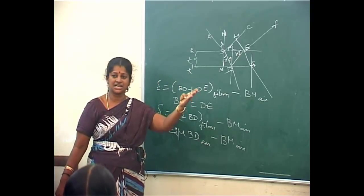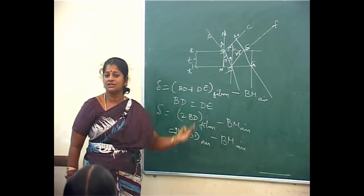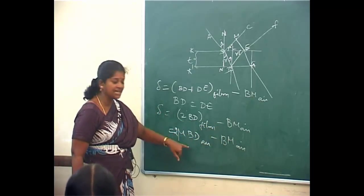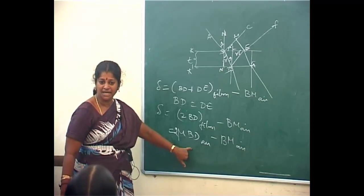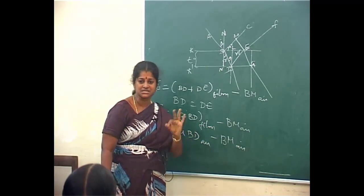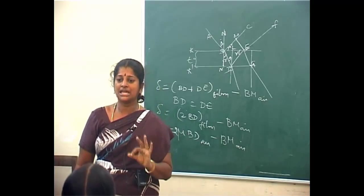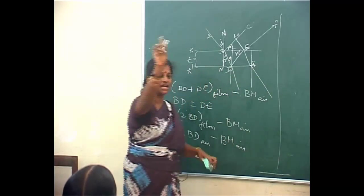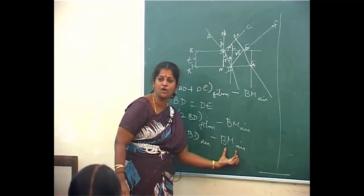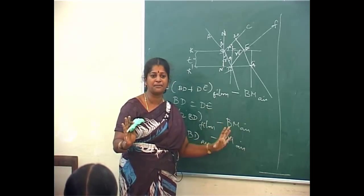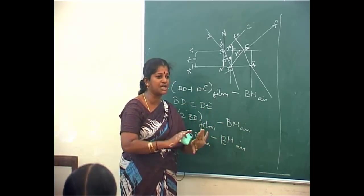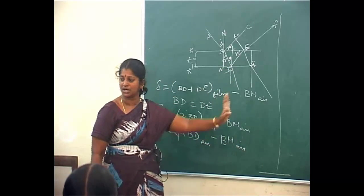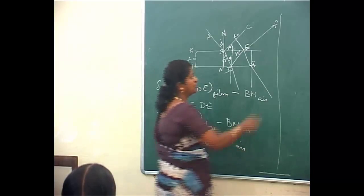You would have studied in the first lesson the principle of homogeneity — both the medium should be same, only then I can do calculations with the quantities. So I need to change this medium to that in air; I will multiply it with the refractive index of the medium. After that, you will find out BM alone — wherever you see alphabets, you reduce and find out in terms of the quantities here. Finally, you will get what is delta. So to find BM: